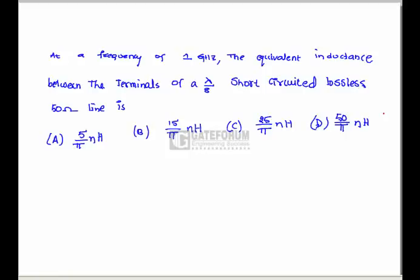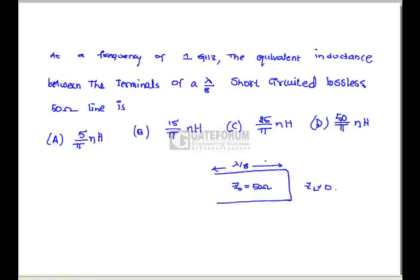The next question: at a frequency of 1 GHz, what is the equivalent inductance between the terminals of a λ/8 short-circuited lossless 50 Ω line? Here the line length is λ/8, it is short-circuited meaning ZL equals 0, and the characteristic impedance Z0 is 50 Ω. We need to calculate the input impedance Z_in.